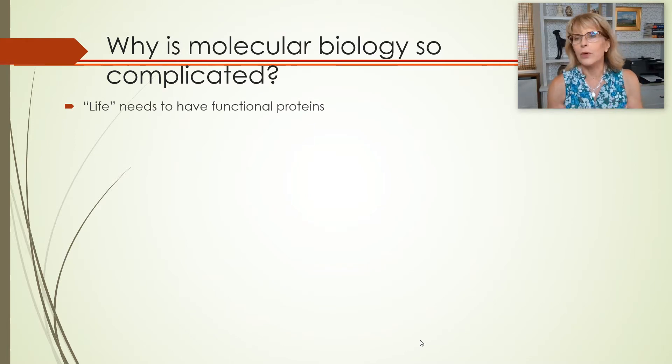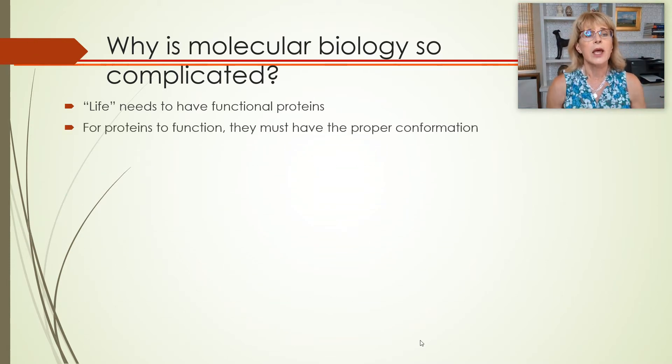In order for life to happen, life needs to have functional proteins. Each one of those proteins is either important to the structure of the cell or it's one of the little robots that is allowing the cell to do what the cell needs to do to be alive and to create an entire living you. And for proteins to function, they have to have the proper conformation, the proper shape.